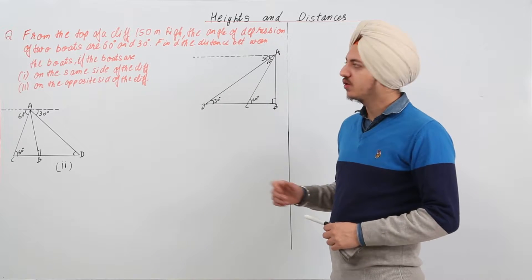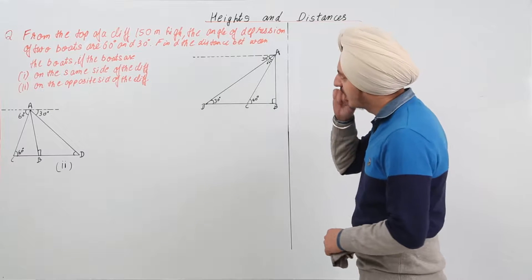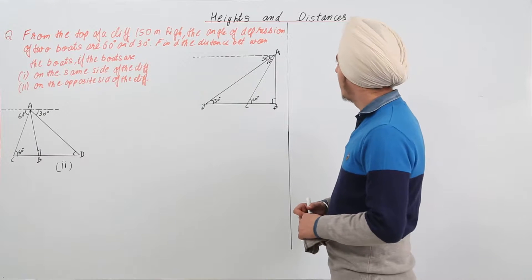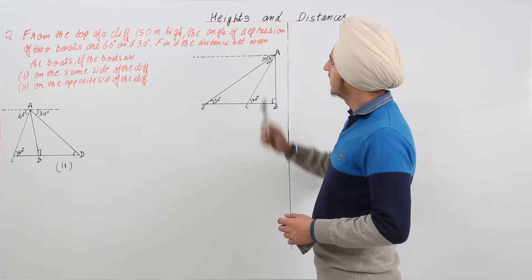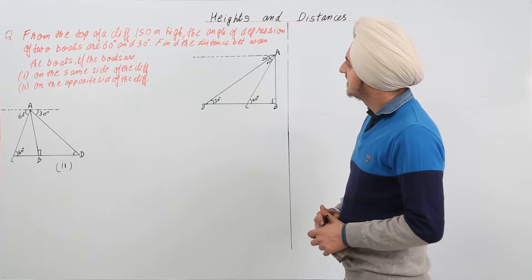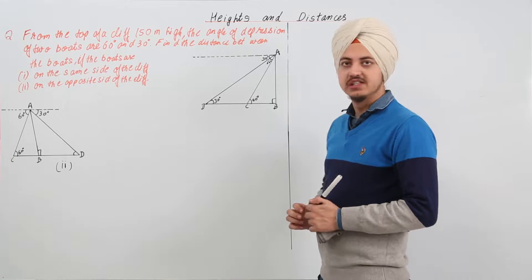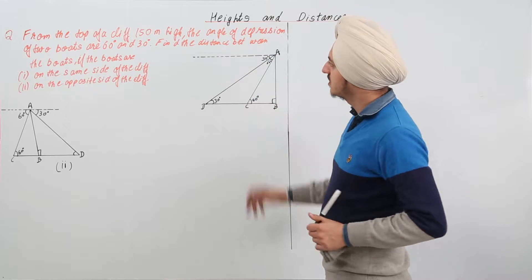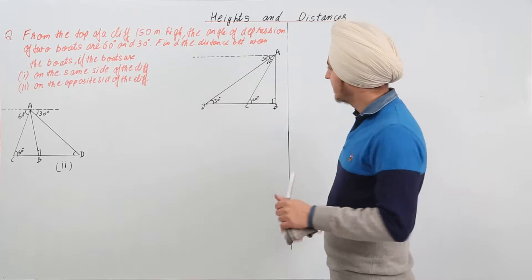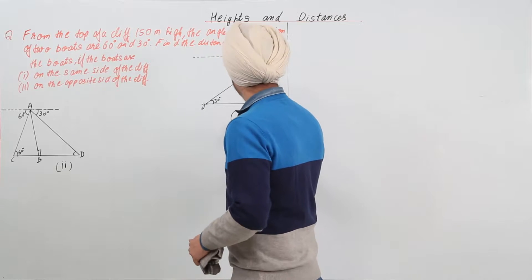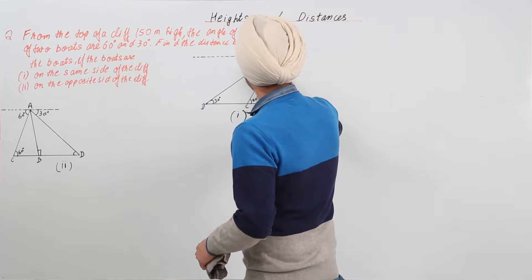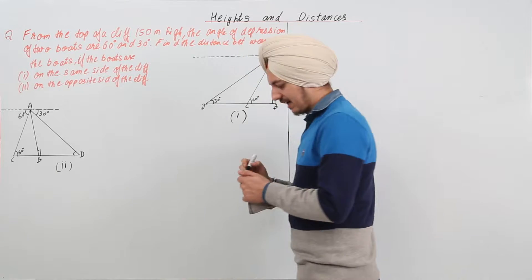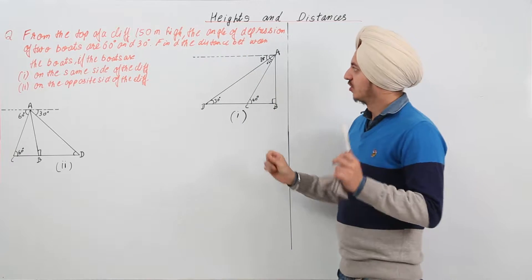The next question says: from the top of a cliff 150 meters high, the angles of depression of boats are 60 degrees and 30 degrees. We need to find the distance between the boats if, first part, the boats are on the same side, and second part, the boats are on the opposite sides of the cliff.